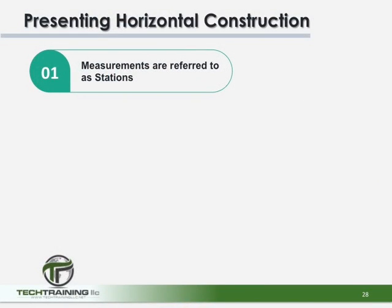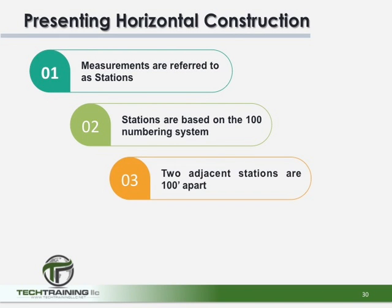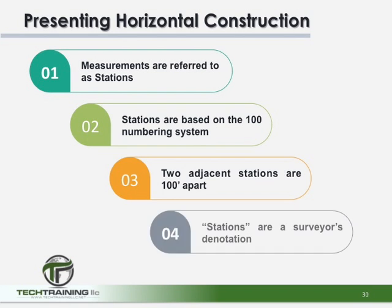In horizontal construction, distances are measured in what is referred to as stations. Stations are merely locations along the horizontal distance and are based on the 100 numbering system. This means that two adjacent stations would be 100 feet apart. The first station may be listed as 1+00 and the second station would be marked as 2+00. The term stations is what a surveyor uses when notating in their book for laying out horizontal construction.